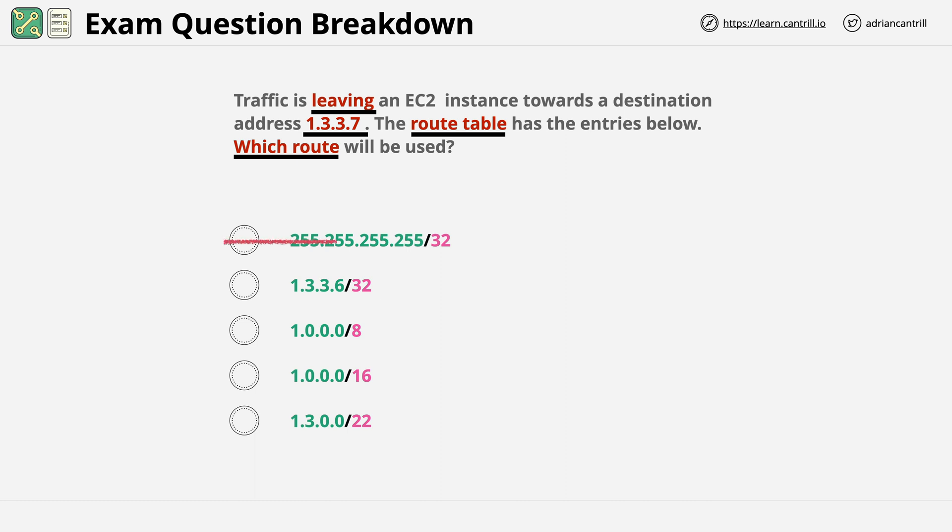This one is not valid. /32 is a single IP. And 255.255.255.255 is a broadcast address. This is not something which is valid in this context. It's not a valid item on a route table. And so the answer self-eliminates.